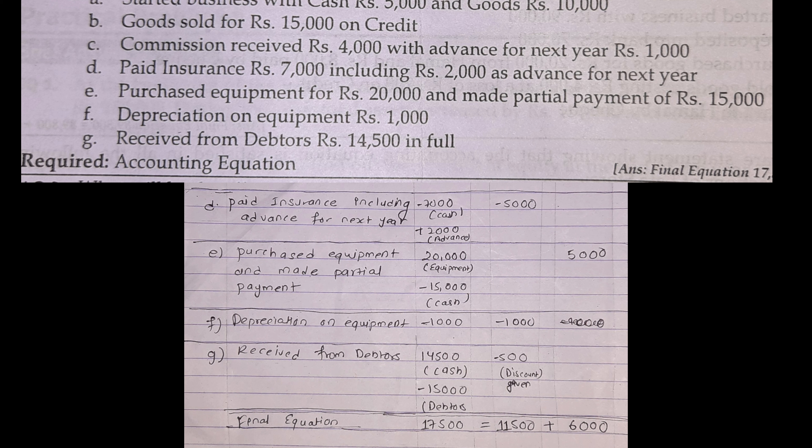We pay cash — minus Rs. 7,000 — and to account for returns we add cash plus Rs. 2,000. So we pay capital rate minus Rs. 5,000. The total capital rate is minus Rs. 5,000.